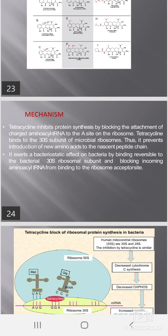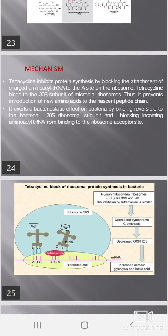You can see in the diagram tetracycline's block of ribosomal protein synthesis in bacteria. In human mitochondria, the ribosome is 55S (comprised of 39S and 20S subunits). The inhibition by tetracycline is similar and leads to decreased cytochrome C synthesis, decreased oxidative phosphorylation, increased aerobic glycolysis, and increased lactic acid production, as shown in the diagram.